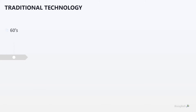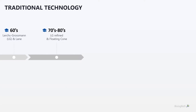The traditional technology started in the 60s, with the Lurks-Grossman algorithm being the most well-known for pit optimization and the Lanes theory on cut-off grade optimization. During the following two decades, those algorithms were refined while others arose, such as the floating cone. Only during the 90s did the first stable application for pit optimization emerge, called Whittle, which came along with more accessible personal computers.